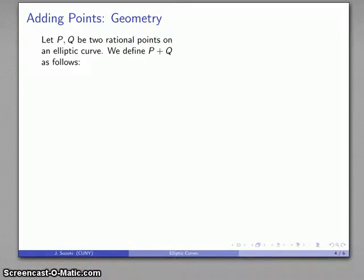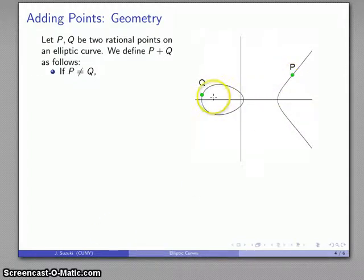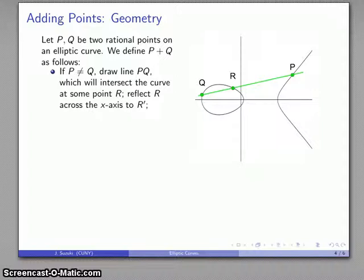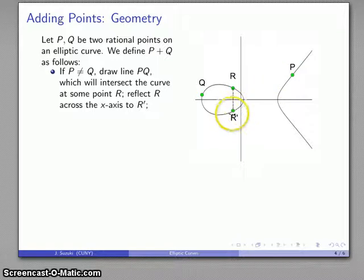Let's say I take two points on an elliptic curve and define their sum as follows. If p is not equal to q — here's another elliptic curve with p and q as distinct points — I draw the line from p to q, which is guaranteed to intersect the curve at some point r (a rational point), and I take the reflection of r across the x-axis to r'. That reflection r' is what I'll define as the sum p + q.